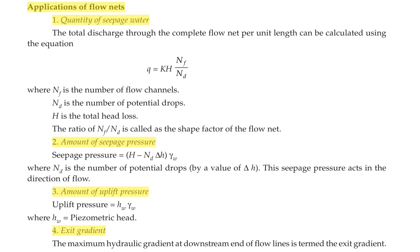Next we are going to see the amount of seepage pressure. This can be calculated by the formula: seepage pressure = (H − ND × ΔH) × γW, where ND is the number of potential drops and ΔH is the potential drop value. The seepage pressure acts in the direction of flow, where γW is the unit weight of water. Uplift pressure is HW × γW, where HW is the piezometric head.